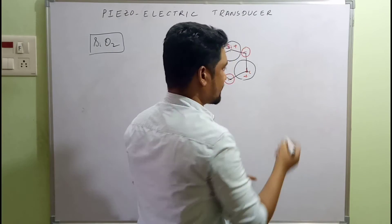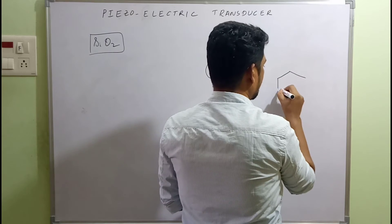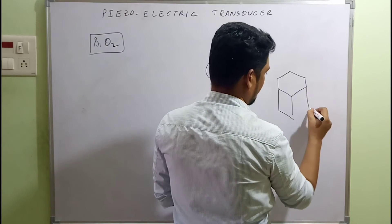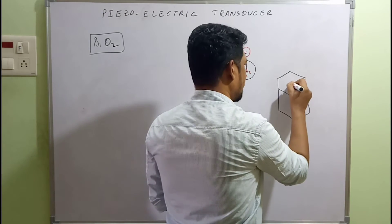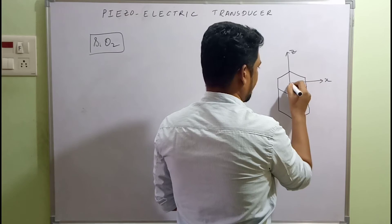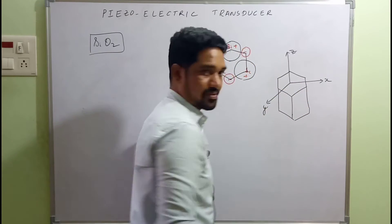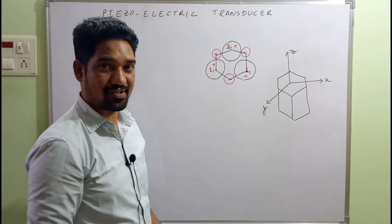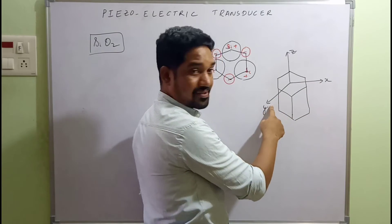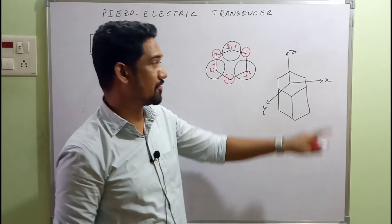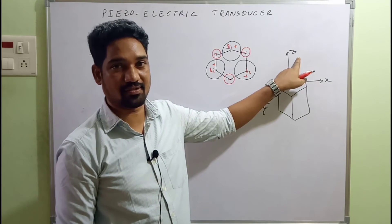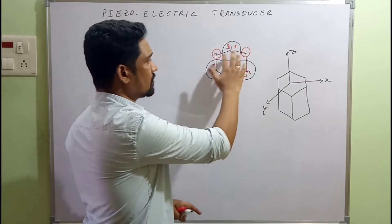Another representation of the quartz crystal shows it projecting as a perfect hexagon. We define three axes: the z-axis, the x-axis, and the y-axis. As far as the quartz crystal is concerned, the x-axis is known as the electrical axis, the y-axis is known as the mechanical axis, and the z-axis is known as the optical axis.